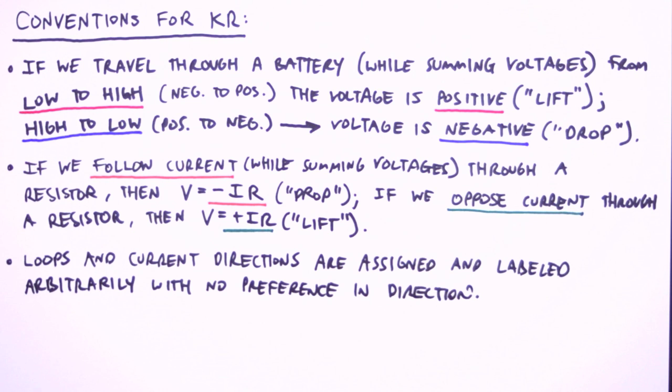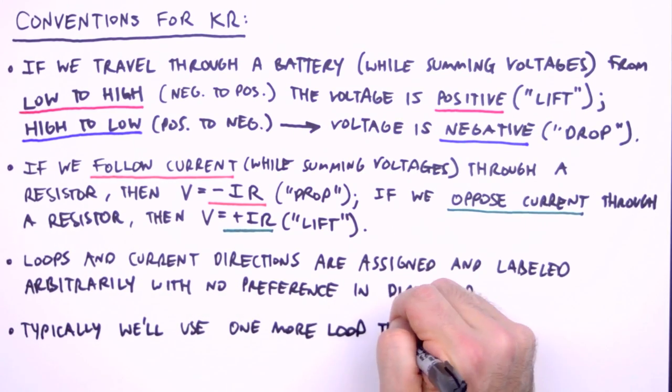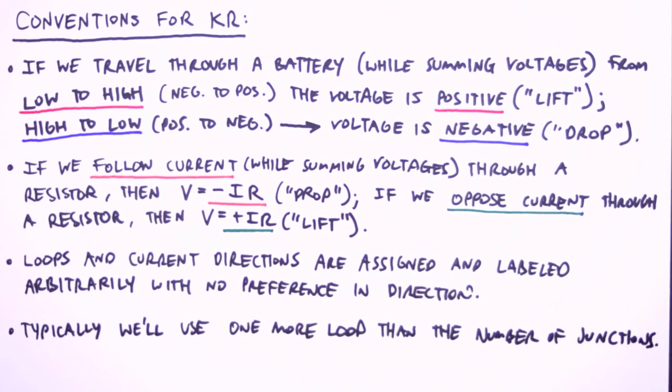One final convention relating to labeling our circuit diagram. Typically, we'll use one more loop than the number of junctions in the circuit, so be sure to have enough of them labeled before applying Kirchhoff's rules.